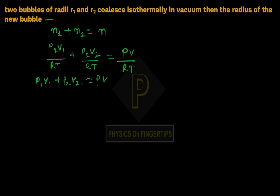Pressure for the first bubble is 4T upon R1. Volume is 4 by 3 pi R1 cube, plus 4T upon R2 into 4 by 3 pi R2 cube, equals 4T upon Rc into 4 by 3 pi Rc cube.